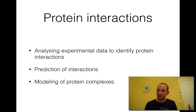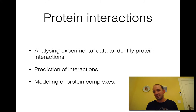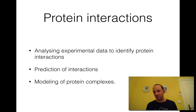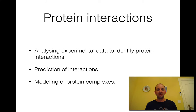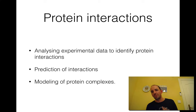Proteins and other molecules do not act alone — they interact with other molecules. A large part of bioinformatics has been focused on identifying these interactions, combining experimental methods with prediction methods, genome sequences, proteomics methods, and pure prediction methods. Once you have predictions of what interacts with what, you can do protein structure prediction and try to model whole complexes.